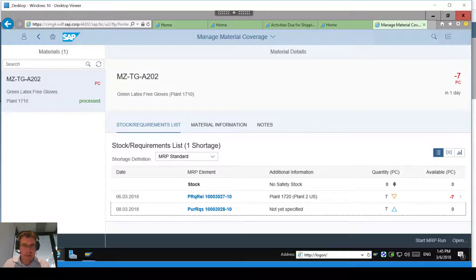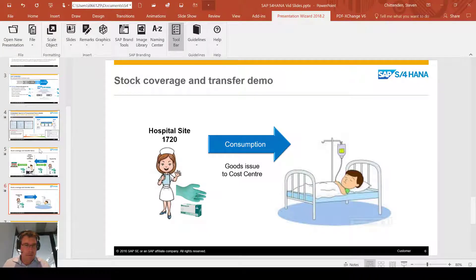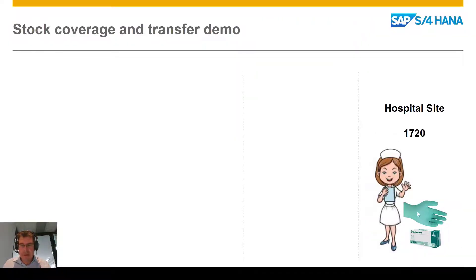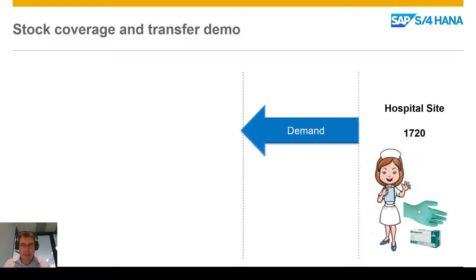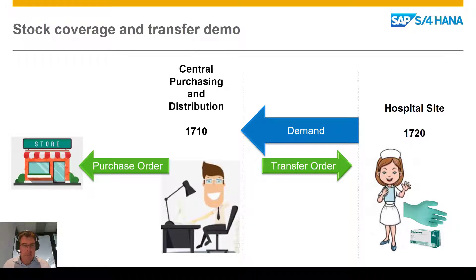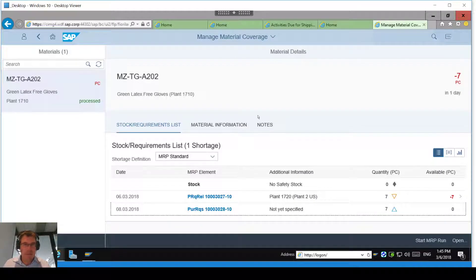Just going back to our diagram so we know where we're at. What we've done so far is the planned independent requirements generated a demand, and running MRP we've generated a purchase requisition. We're then going to generate the purchase order out to the store.